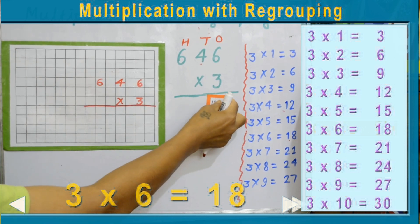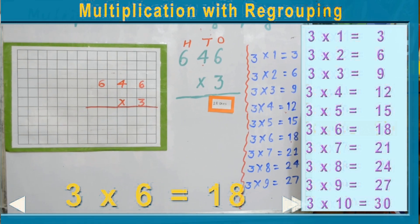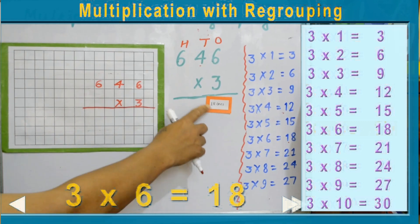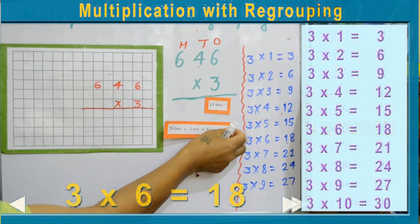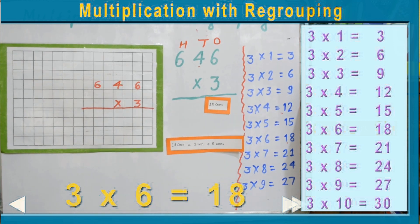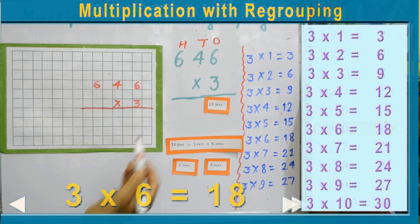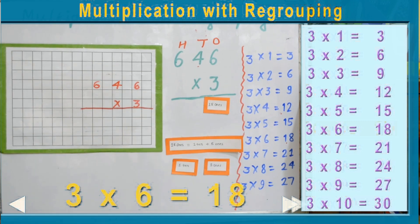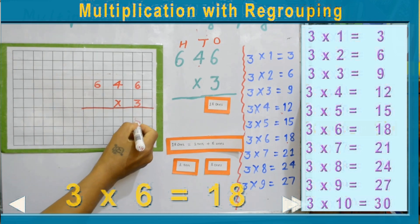Now look at this — 18 is a two-digit number, and the ones place can hold only one digit. That means we need to regroup 18, which is one ten and eight ones. So the ones place can hold only the ones number, which is eight ones — so we write 8 here in the ones place.